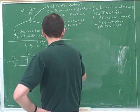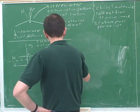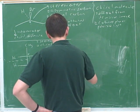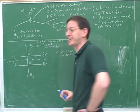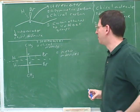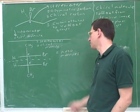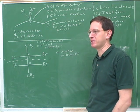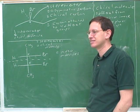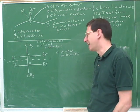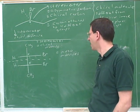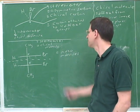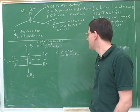A meso molecule is a molecule that does not have an enantiomer. Unfortunately, students oftentimes don't get clear in their mind about the difference between all these different concepts. In any case, this here is a meso molecule.